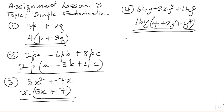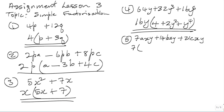Number 5 is 7AXY plus 14BXY plus 21CXY. Look on all three terms and see what is common. 7 is a common factor. A is not common — A is not in the other two terms. X is common, so we take out X also. Y is in all three terms, so we also take out Y. So 7XY is a common factor.